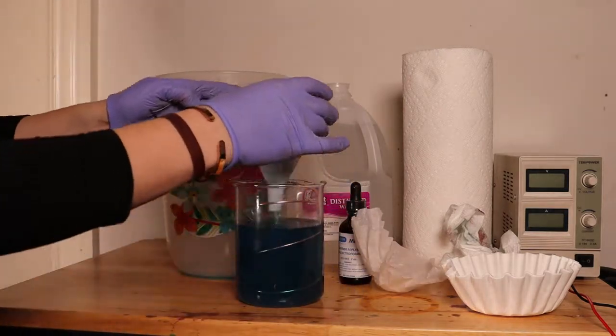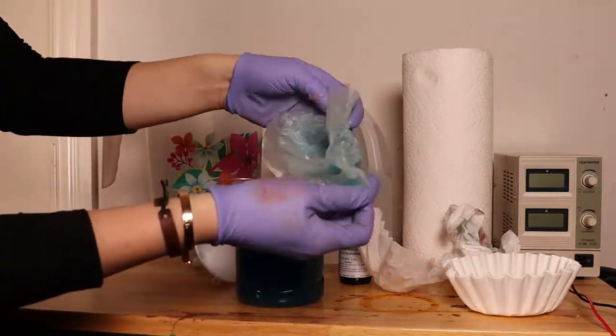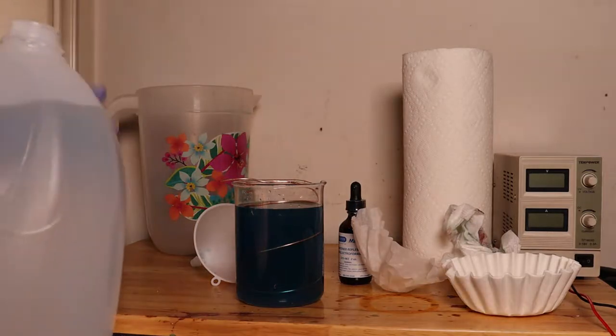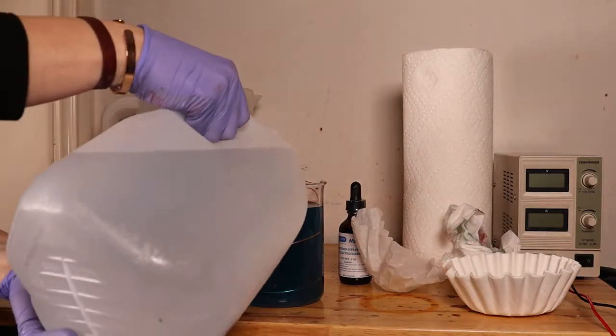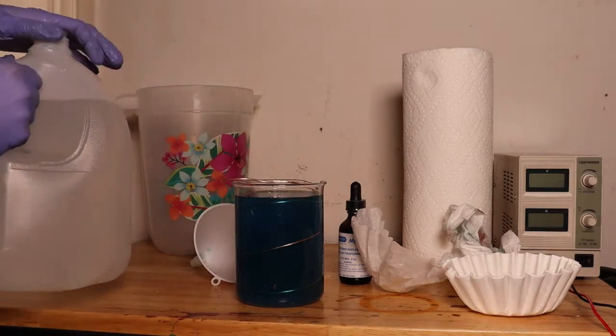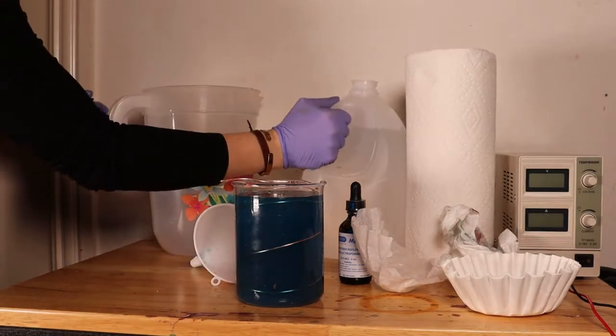What I'm pointing to on the beaker is where I have a piece of scotch tape that lets me know how much I need to refill my solution. In order to replenish my solution, I'm using a little bit of distilled water up until the top of my scotch tape, and then I'm adding a few drops of the Midas brightener, which I will link below the video.